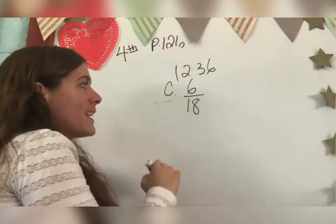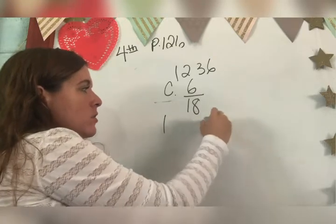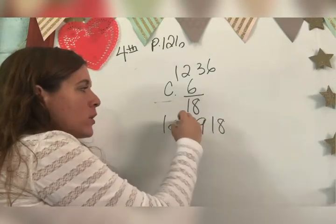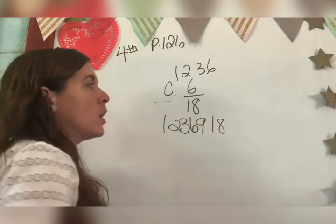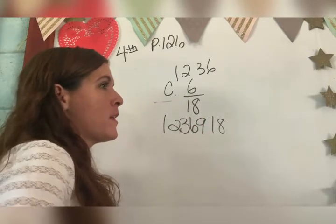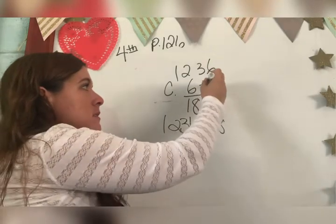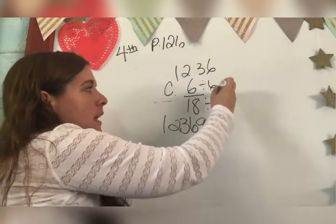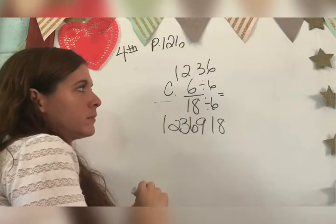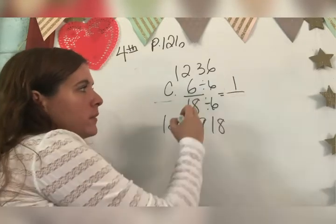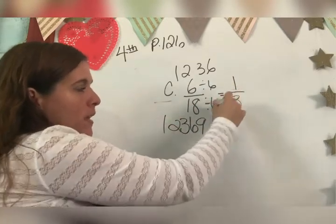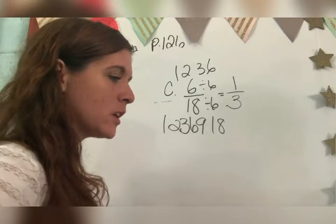What are my factors of eighteen, Fernanda? One, eighteen, two, nine, three, six. Good. What's my greatest common factor, Holly? Six. So what's my answer, Chiara? One over three. Good. I hope you got that.